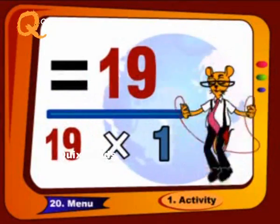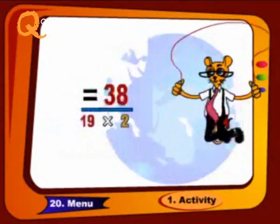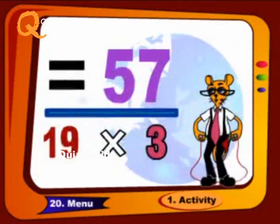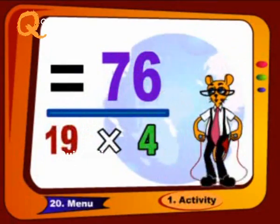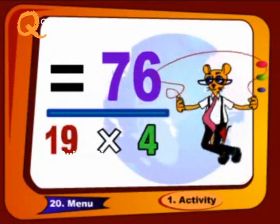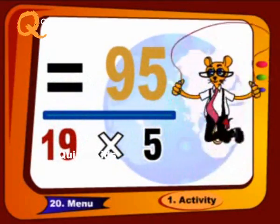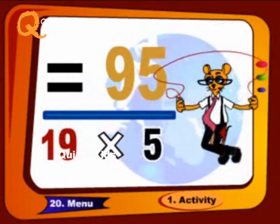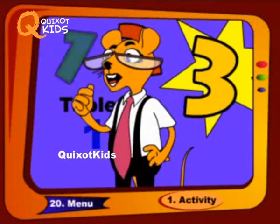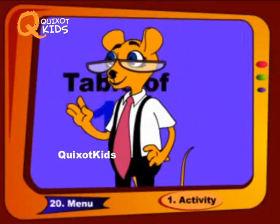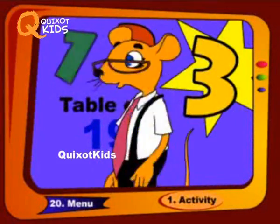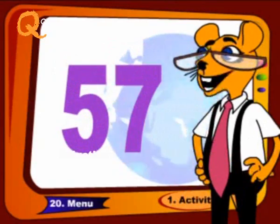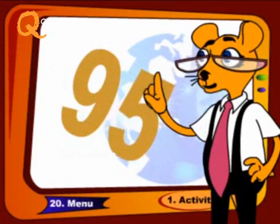Nineteen 1s are 19, nineteen 2s are 38, nineteen 3s are 57, nineteen 4s are 76, nineteen 5s are 95. We will revise it again — sing with me like this: 19, 38, 57, 76 and 95.